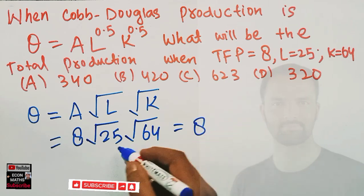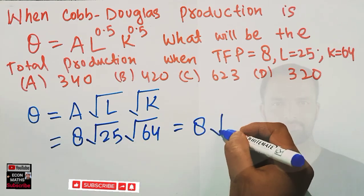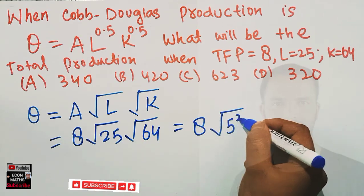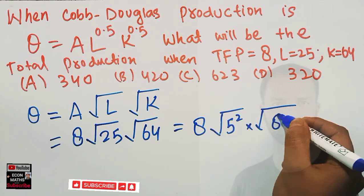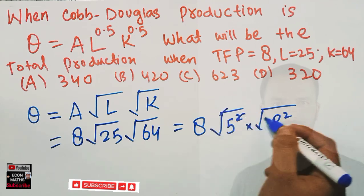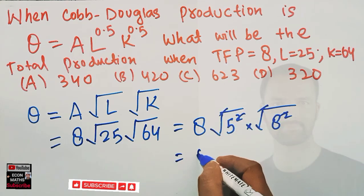8 × √25 × √64. We can write 25 as 5² and 64 as 8². The square roots cancel with the squares, leaving us with 8